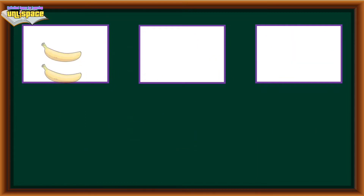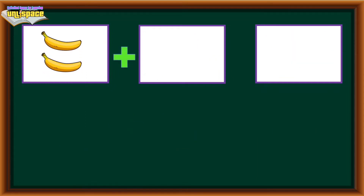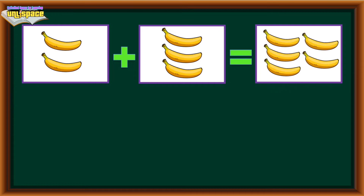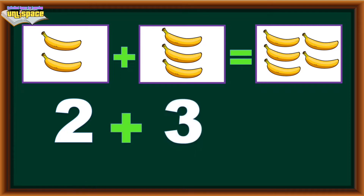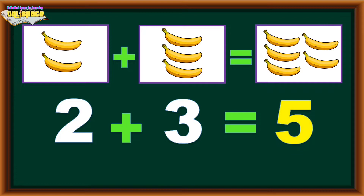2 bananas plus 3 bananas equals 5 bananas. 2 plus 3 equals 5.